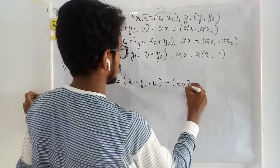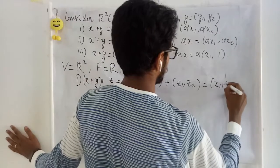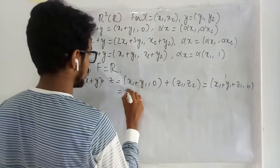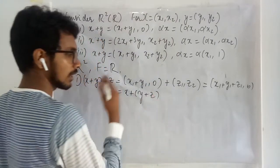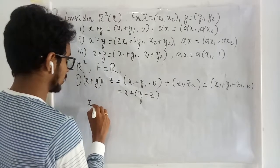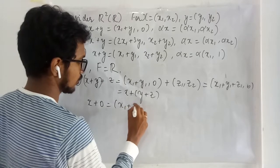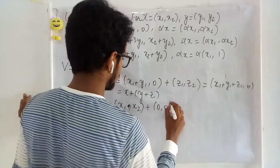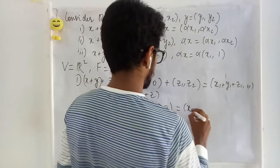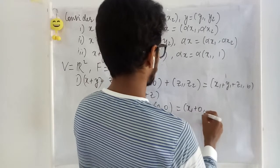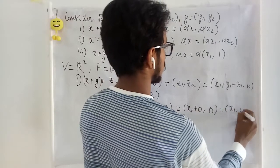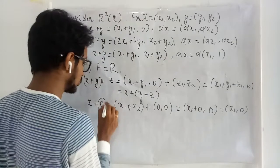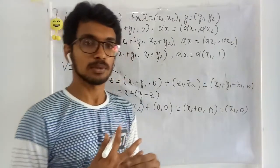Operating in one order gives x₁ + y₁ + z₁ with 0 in the second entry, and doing it the other way around gives the same result, so associativity is satisfied. Now let us look for the identity element: taking x₁, x₂ added with 0, 1 gives x₁ + 0, 0, which equals x₁, 0 — but we need to get back x₁, x₂.